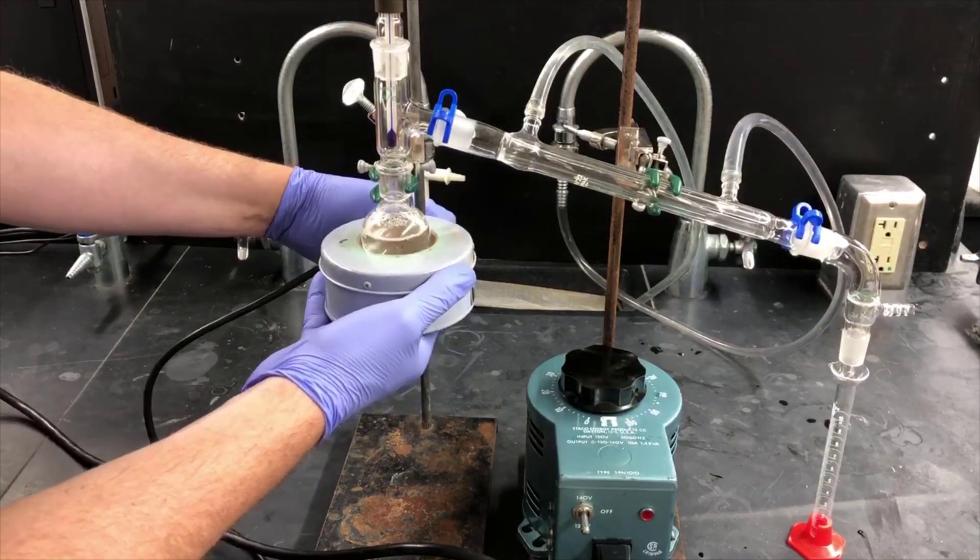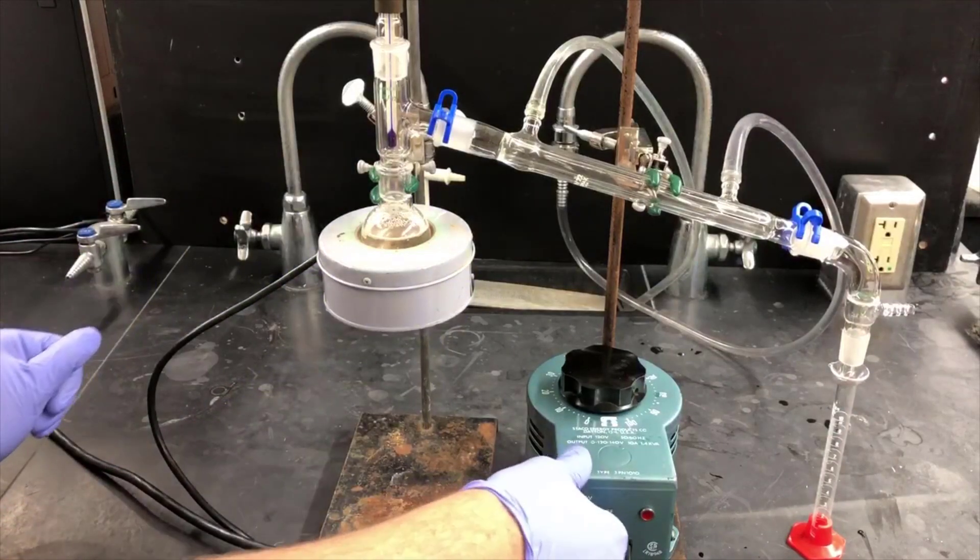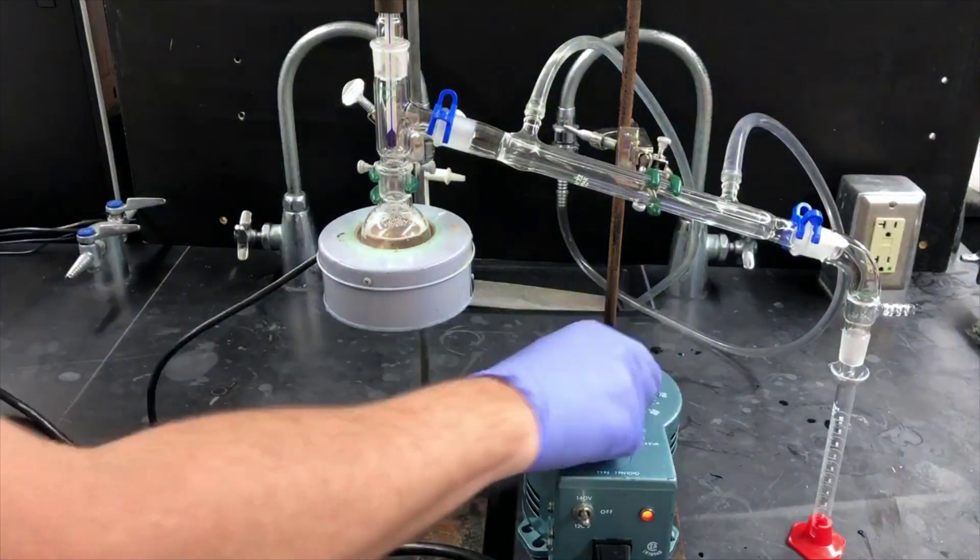Here I'm raising up the heating mantle to make sure it makes good tight contact with the bottom of the flask. I'm turning on the variable transformer and setting it to about 50% power.